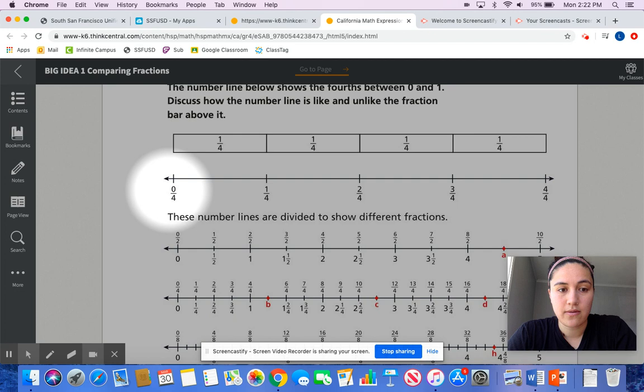Here on this side of the number line, we have 4 fourths. If you remember, when the numerator is the same as the denominator, in this case 4 and 4, then that fraction is equal to 1 whole. So here we have a number line that's between 0 and 1 whole, and 1 fourth, 2 fourths, and 3 fourths are all in between.